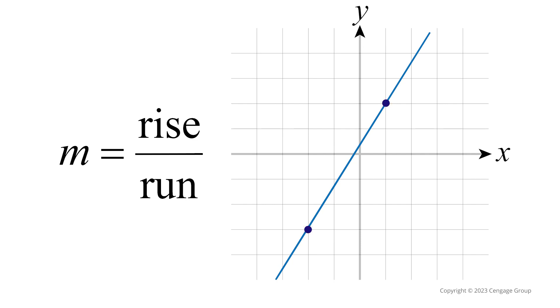To find the rise, we start at the leftmost point. We count the number of units up or down until we're on the same level as the rightmost point. This number of units is the line's change in the y direction, or its rise. So, in this example, the rise is positive 5. Now, keep in mind if we count downwards, the rise value would be negative.